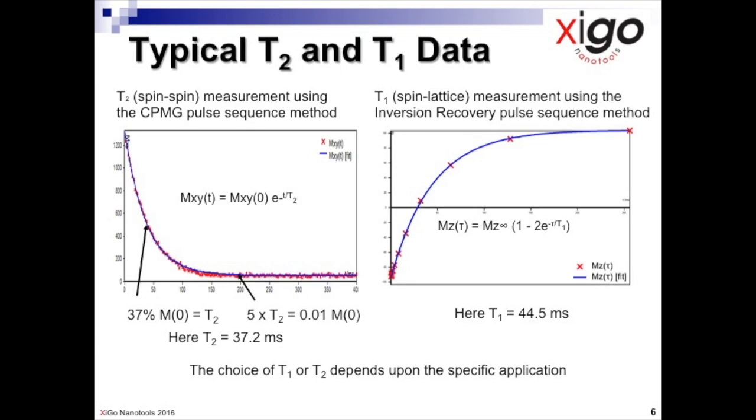Here we show typical T2 and T1 data obtained on the same sample using the Xigo Area Quant software. Note that the value for T2 is less than the value for T1. So the question is, which method to use?